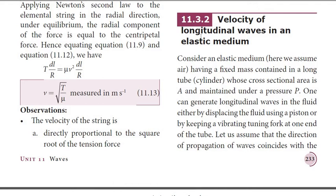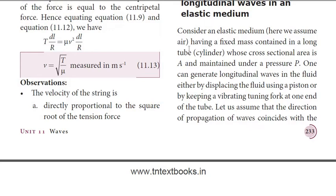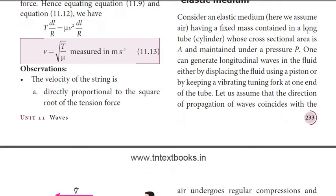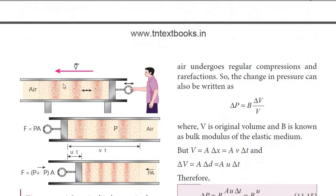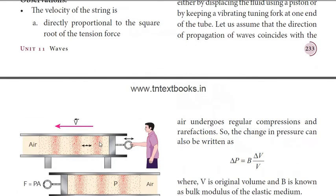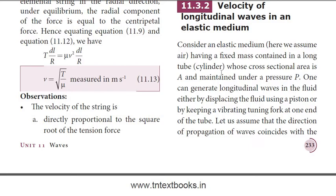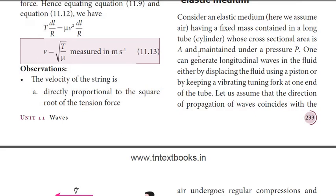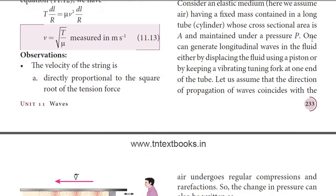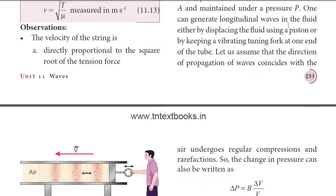The topic of this video is the velocity of longitudinal waves in an elastic medium. Consider an elastic medium: a fixed mass of air contained in a long cylindrical tube. When a person pushes a piston into the tube, compression and rarefaction takes place in the air molecules. The cross-sectional area is represented as capital A, maintained under pressure capital P. One can generate longitudinal waves in the fluid by displacing it using the piston or by keeping a vibrating tuning fork at one end of the tube.